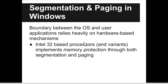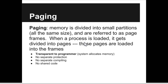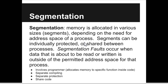The aspects of memory handling you need to be familiar with are the differences between segmentation and paging — not just in Windows but in operating systems generally. Windows tends to rely more on paging. Paging is basically memory divided into small, equal-size partitions called page frames. When a process gets loaded, it gets split up into pages and those pages get put into the frames. It's transparent to the programmer. Segmentation, on the other hand, is memory allocated in various sizes — not all fixed — depending on the address space needs of the process.